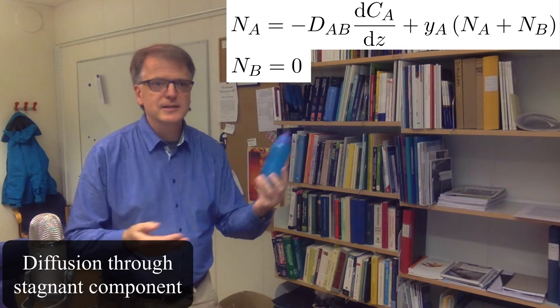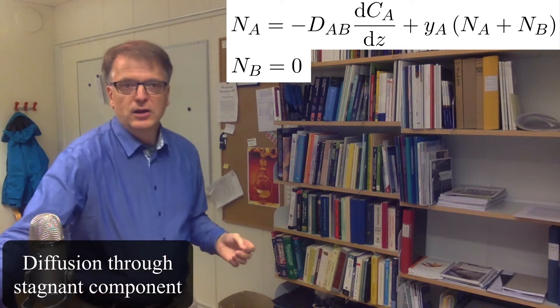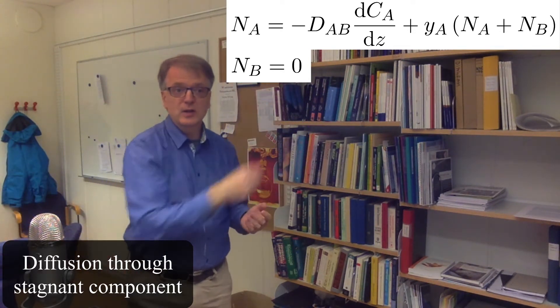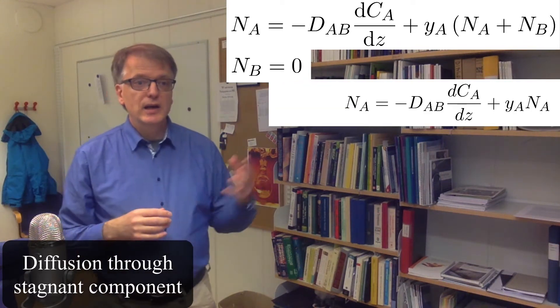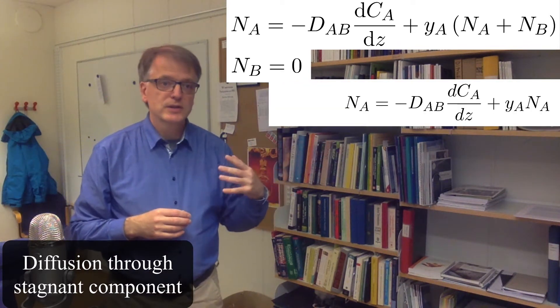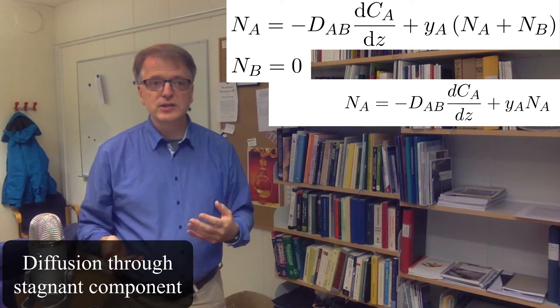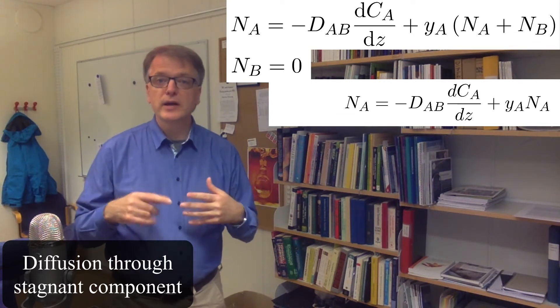So what happens then? Well Nb equals zero, so we take that away and we're left with this equation: Na equals minus diffusivity times the concentration gradient plus yA times Na.